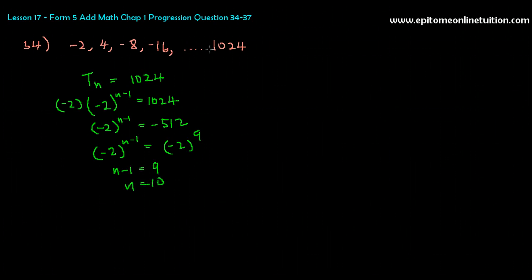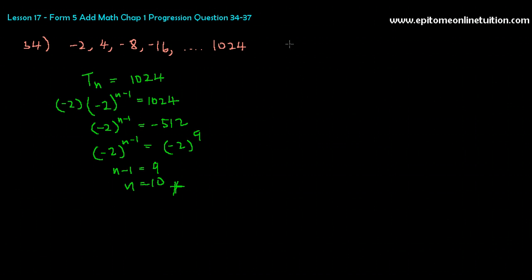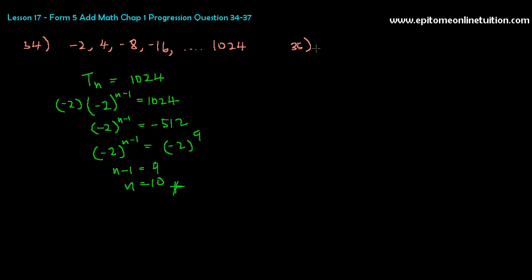So there are 10 terms here. That's number 34. Let's go to 35 — 35 is similar. Question 35 says: which term of the GP is 9 over 32?